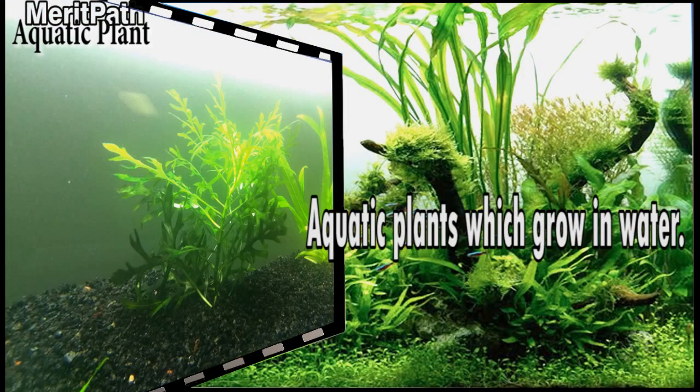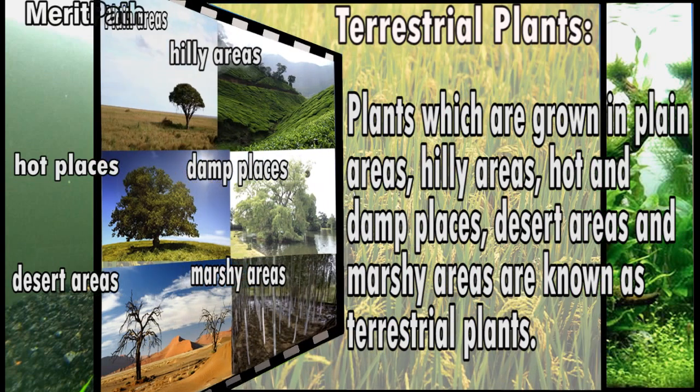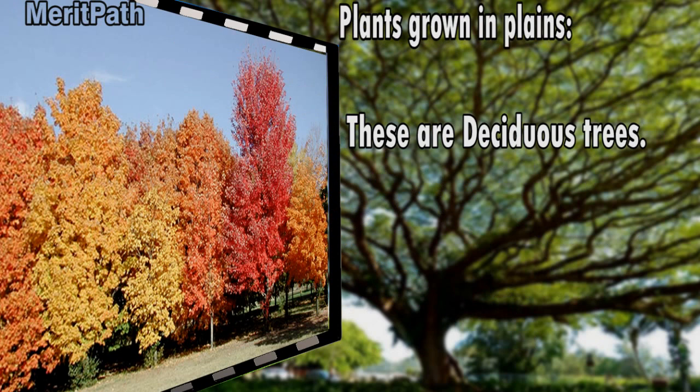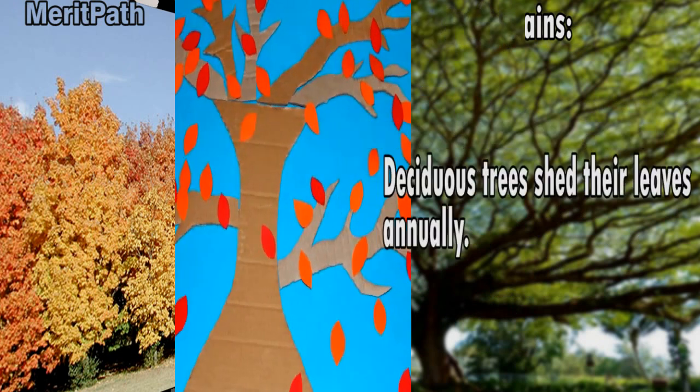Plants are classified depending on the habitat into terrestrial plants, which grow on land, and aquatic plants, which grow on water. Terrestrial plants are plants which grow in plain areas, hilly areas, hot and damp places, desert areas, and marshy areas.